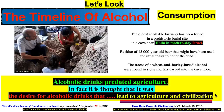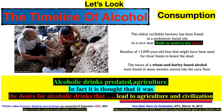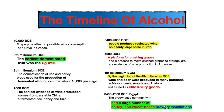Let's look at the timeline of alcohol consumption. Alcoholic drinks actually predated agriculture — it is thought that the desire for alcoholic drinks was one of the motivations that led to agriculture and civilization itself. There's a great BBC article: 'World's oldest brewery found in a cave in Israel' from 2018. About 10,000 years ago, grape pips attesting to possible wine consumption appeared in a cave in Greece. In the 9th millennium BCE, the earliest domesticated fruit was the fig tree. In the 8th millennium, domestication of rice and barley crops were used for fermented alcohol.